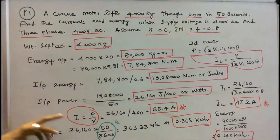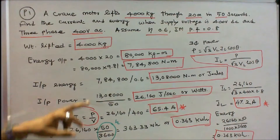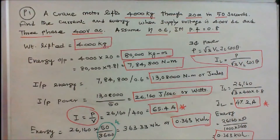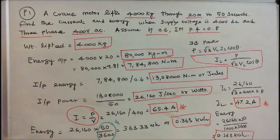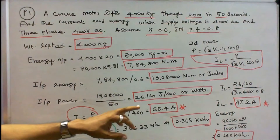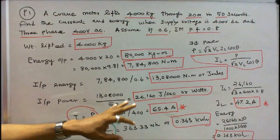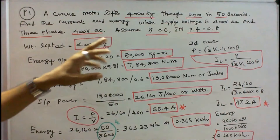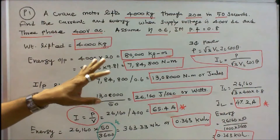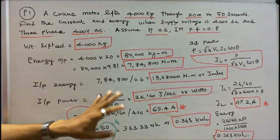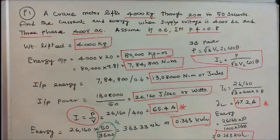We can find the current I. I is equal to P by V. V is given 400 V DC. Therefore 26,160 divided by 400, that is equal to 65.4 amps. So when connected to the DC supply, the system draws 65.4 amps.